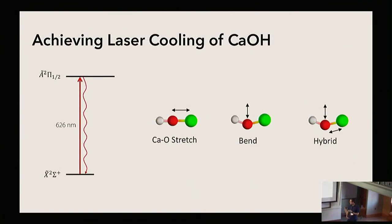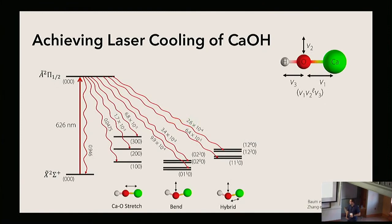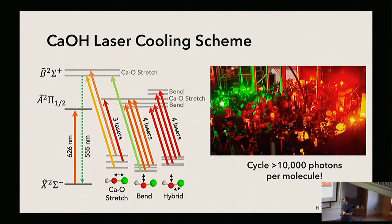How do we achieve laser cooling on a molecule like this? On top of the degrees of freedom in a diatomic molecule, here we also have a bending mode as well as a hybrid mode that combines the stretching mode and the bending mode. Looking at CaOH, we can ask how many different decay channels there are down to the 10^-4 level — about the number of photons we need to actually laser cool this molecule. We can identify all of these states and address them with about a dozen lasers, allowing us to cycle over 10,000 photons per CaOH molecule. This is now enough to do all the laser cooling we've done on CaF, now on CaOH.